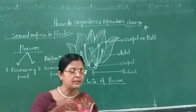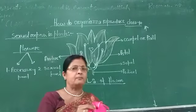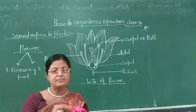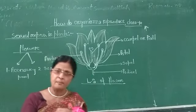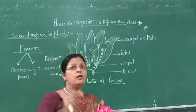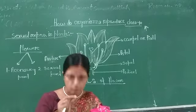What do we call this colourful part of the flower? This colourful whorl is called the corolla, and the process it facilitates is called pollination.